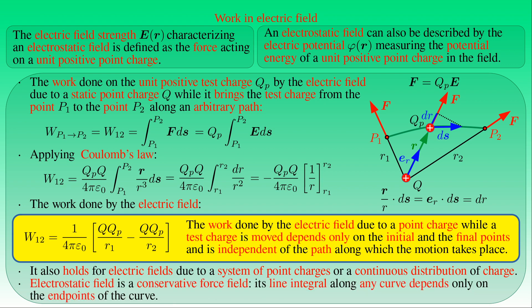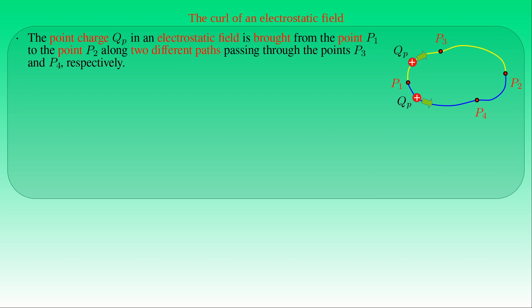Therefore, the electrostatic force is a conservative force. If we bring test charge QP from P1 to P2 along two different paths crossing P3 and P4 respectively, since the electrostatic force is conservative, the work done along both paths is the same. That is, the work along the path P1→P3→P2 equals the work along the path P1→P4→P2.